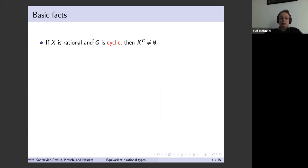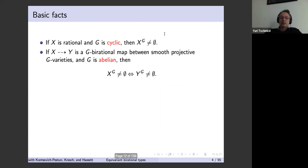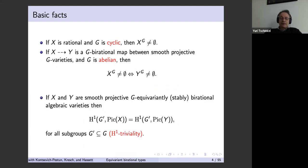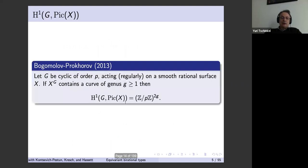Some basic facts: if you have a cyclic group and X is rational, we must have fixed points. If the group is abelian, having fixed points is a birational invariant. If X and Y are stably birational G-varieties, then the group cohomology H^1 of G acting on the Picard group must be the same for all subgroups — this is called H^1-triviality when it is zero. For cyclic groups acting on rational surfaces, a curve of genus at least one in the fixed locus tells you something about this cohomological invariant H^1.